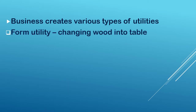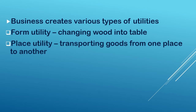Form utility: changing wood into a table. The wood lying in the corner had no satisfying power, but now it has been changed into a table that satisfies the customer. Place utility: transporting goods from one place to another. Goods are not available everywhere, so they are imported from other states or outside and made available to customers — like different types of fruits, clothing materials, or other items transported to create place utility.